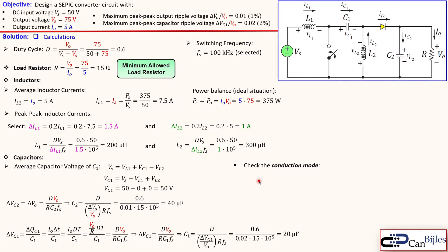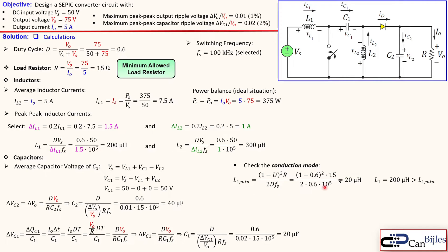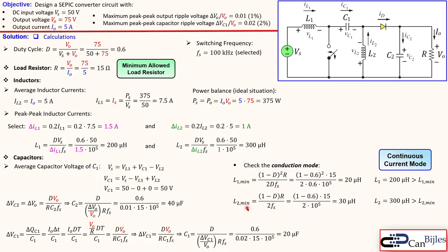Now let's check the conduction mode. We need to verify all inductor and capacitor values actually operate in continuous conduction mode (CCM). For L1, substituting the duty cycle, load resistor, and switching frequency gives a minimum value of 20 µH. Our L1 is 200 µH — more than enough. For L2, the minimum value (using the same formula as for the buck converter) is 30 µH, and our L2 is 300 µH — well above the minimum. We confirm we are in continuous current mode.